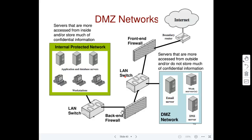That's the idea behind a DMZ network. You can also use two firewalls in sequence: the front-end could be a packet filter firewall that allows many packets from outside to reach the DMZ network, while the back-end is where you could run your stateful firewall or application firewall to filter packets going to the internal protected network, limiting the number of packets reaching it and conserving bandwidth.